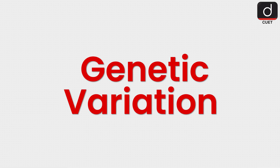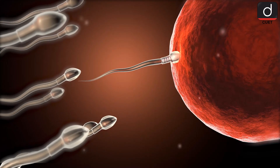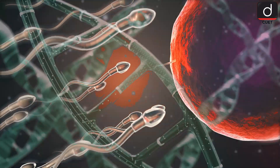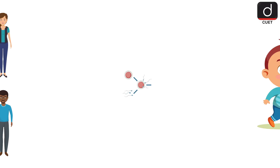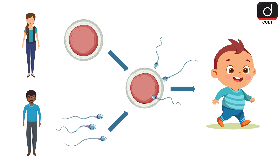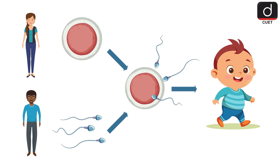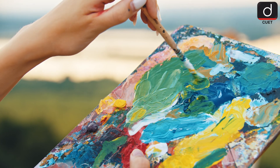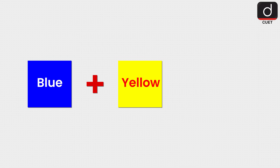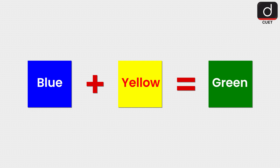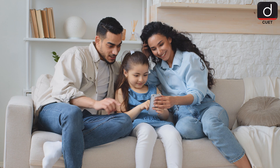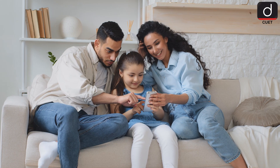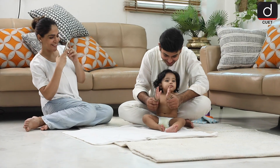One of the coolest things about sexual reproduction is that it creates genetic variation, meaning the offspring are not identical to either parent but have a mix of traits from both. Imagine mixing two different colors of paint — blue and yellow — the result is green, a new color that's different from either parent color. This is why children may look a bit like their mom and dad but are still unique individuals.